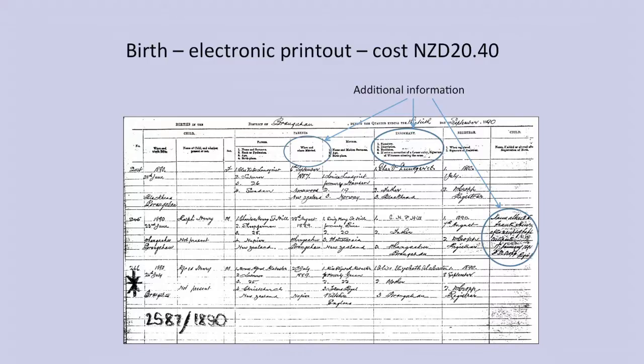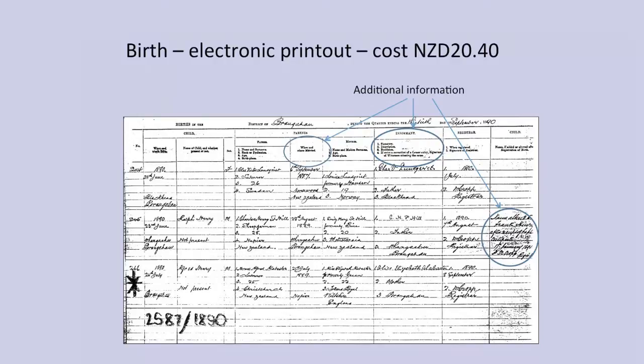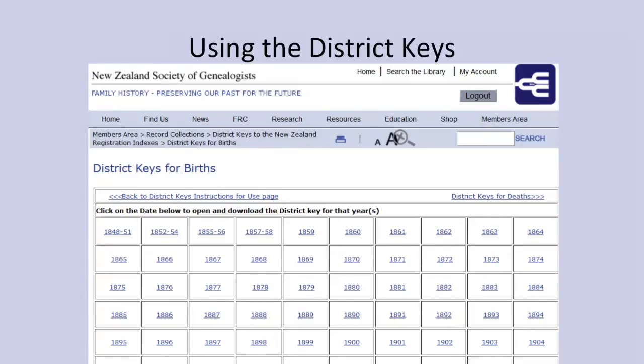If we go for the birth electronic printout, you will notice from this example — which is Alfred Henry's birth — that I have written three lots of additional information that you don't get on a certificate. You get when the parents were married, who the informant was, and if there was any additional information on the certificate, that is also on this printout. At the bottom you'll see handwritten numbers: 2587 and 1890. 2587 is the microfiche reference and 1890 is the year.